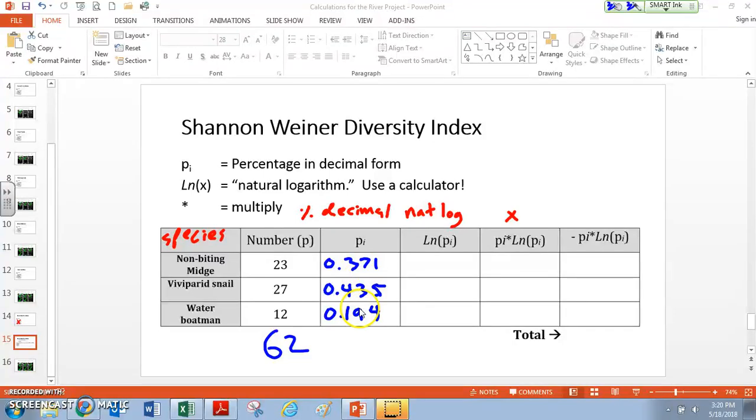And if we do it right, these should add up to 1. And you'll notice that they actually do. They add up to 1.000. So that's the first step, is to just find the species, the number of each. Based on the total, what is the percent decimal of each one? We want to round to the thousandths.